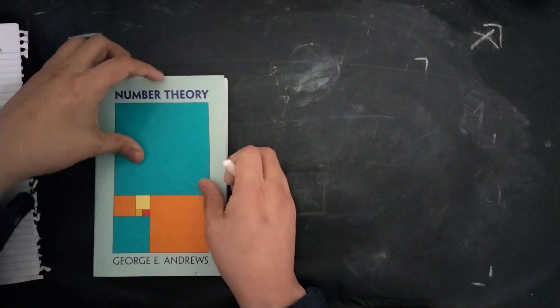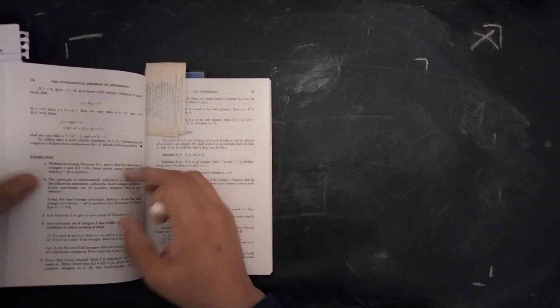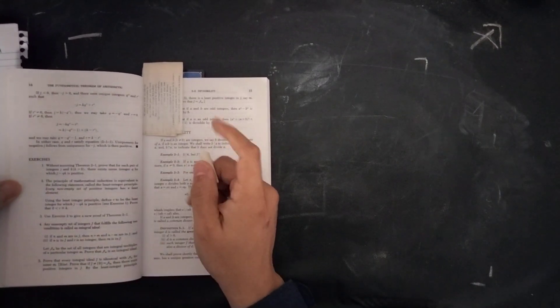Hello friends. Today we're going to be solving problem 1 from number theory George E Andrews. This is section 2-1.